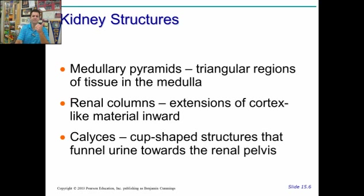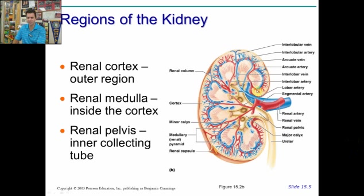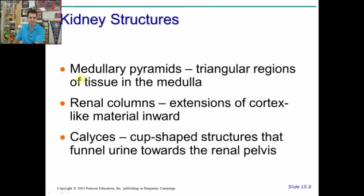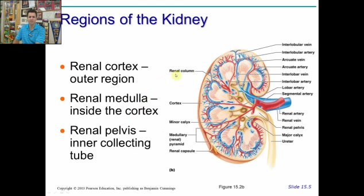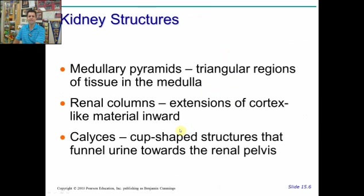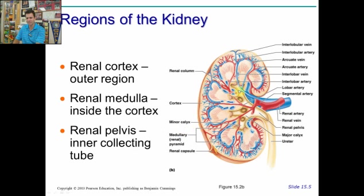Medullary pyramids are the triangular regions of tissue — these are part of the medulla, hence medullary pyramids. The renal columns are the actual cortex that plunges down into the medullary area. Then lastly you have the calices — major and minor based on size — but they all help to funnel and feed the urine from all the different nephrons in the medulla and the cortex, collecting the urine into the ureter.